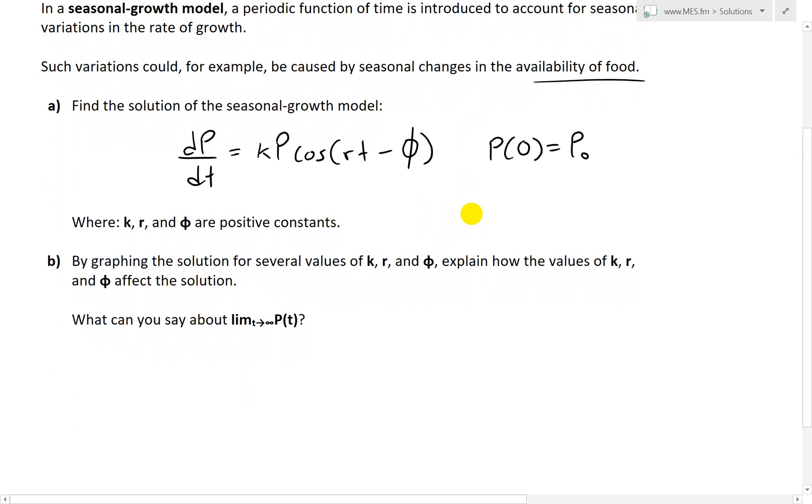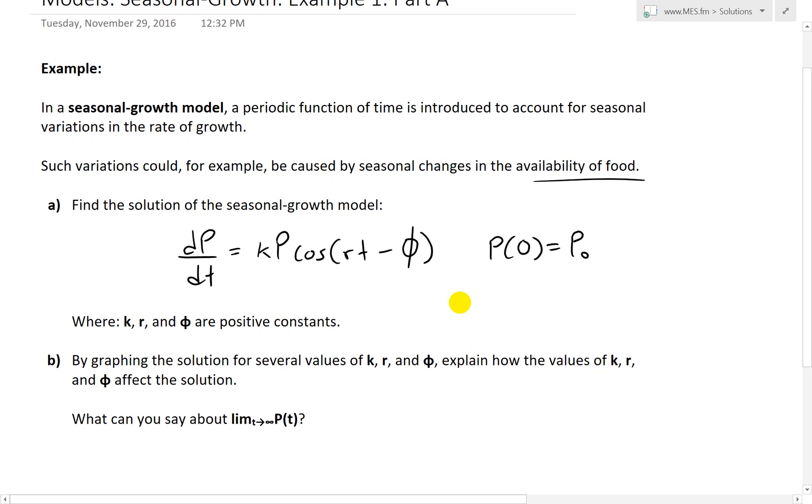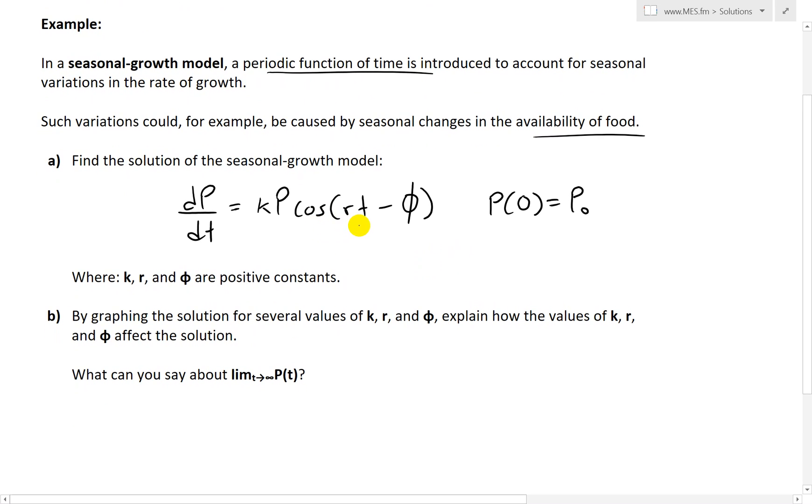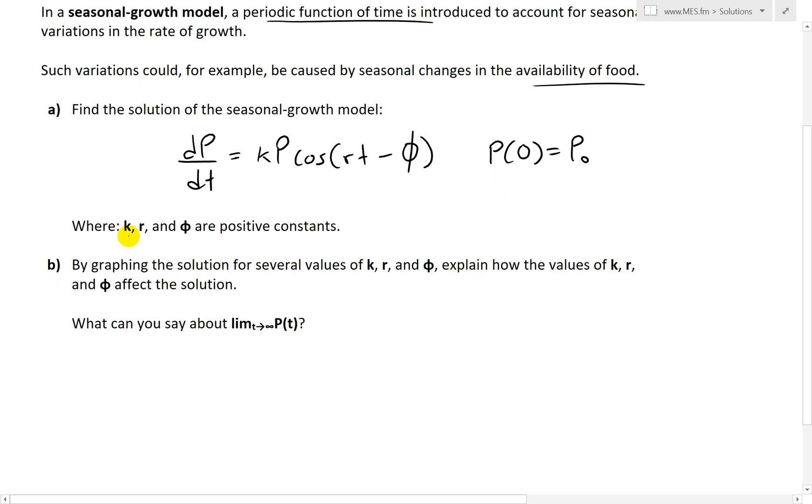So let's look at an example of that model. So part A states, find the solution of the seasonal growth model over here. This one is dP over dt, where P is the population, T is the time. And then this equals to K, that's the proportionality constant K, times P, times, now we have this periodic function of time. And this is a periodic one, it's usually a trigonometric function, like this one, cosine times Rt minus this one is phi, that's a Greek symbol phi, usually used for angles.